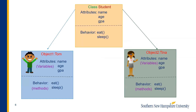Let's consider a class called Student. It has some attributes: name, age, and GPA. It has some methods: eat and sleep. We could create an object or instance of this class and call it Tom. This object Tom will have a name, age, and GPA associated with it. We could create another object called Tina, and there will be some values for the name, age, and GPA associated with Tina. So we can create multiple student objects or instances from this class Student, and each of these objects will have a name, age, and GPA associated with it.